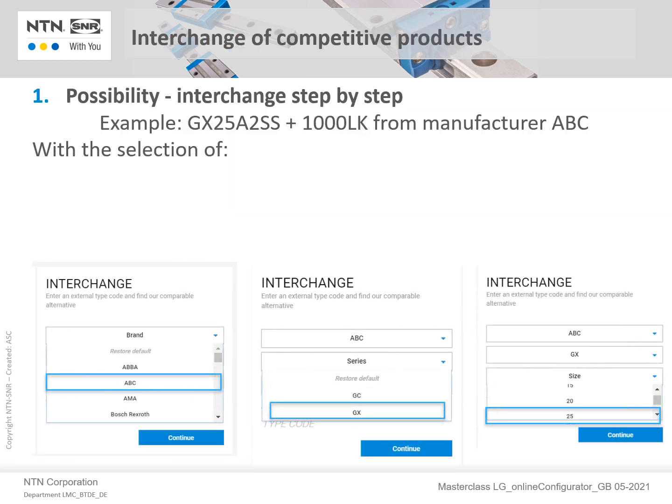Let's start with the interchange of competitive products using a step-by-step approach. For the purposes of this demonstration, we will interchange part number GX25A2SS plus 1000LK from manufacturer ABC as shown at the top. First of all, select the brand ABC.